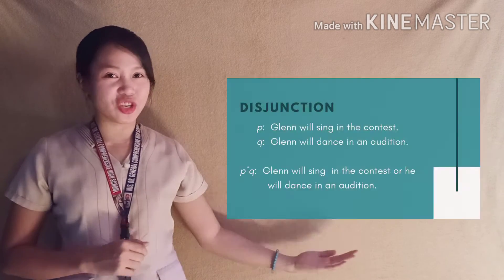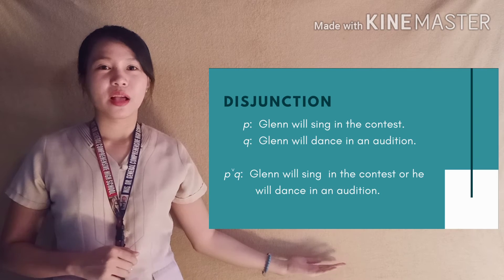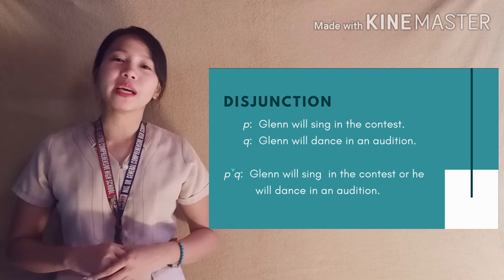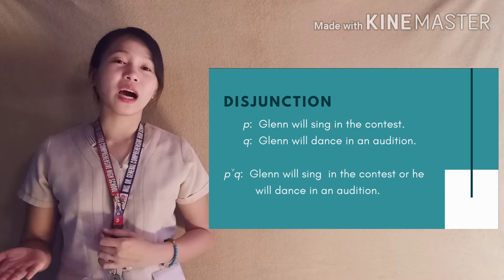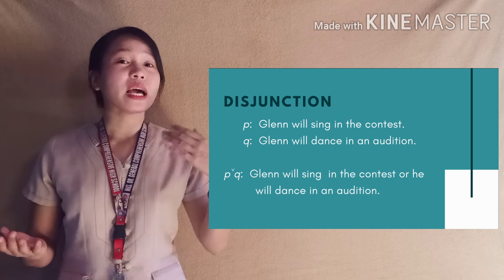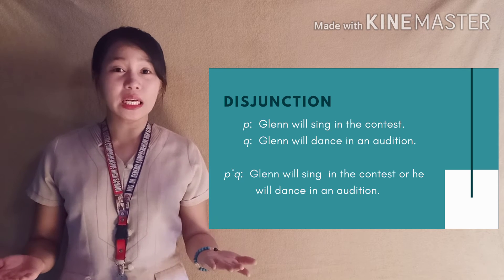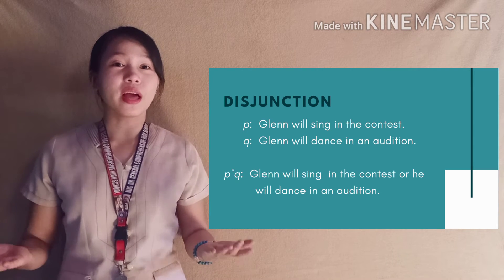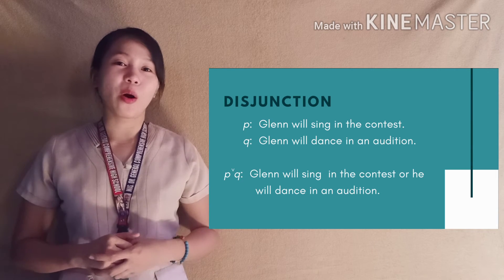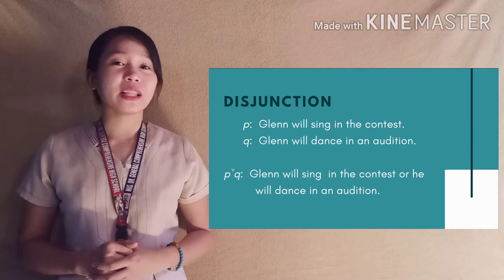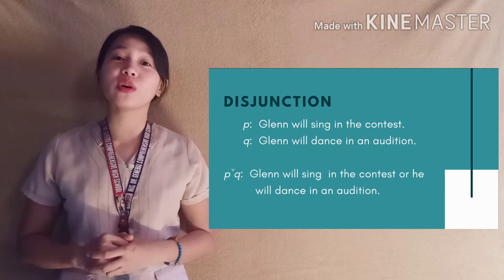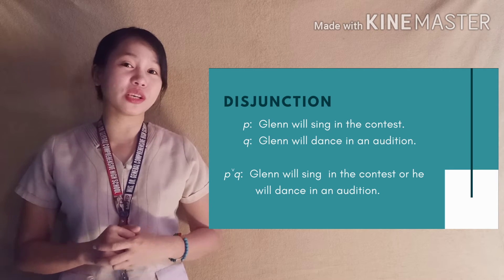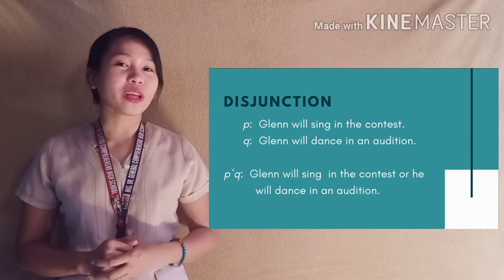Let's proceed to disjunction. Our P is: Glenn will sing in a contest, and our Q is: Glenn will dance in an audition. What other examples can you think of?